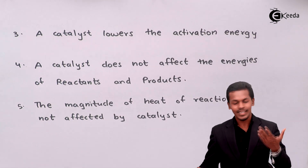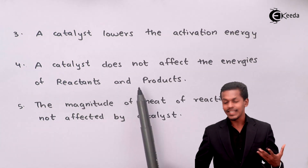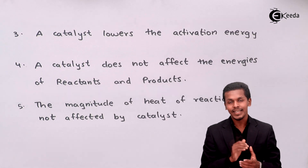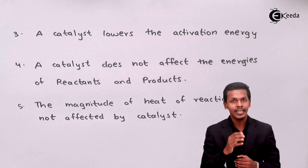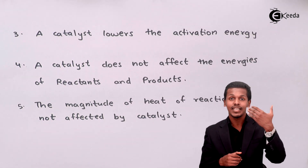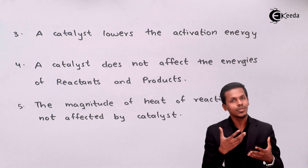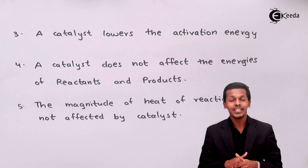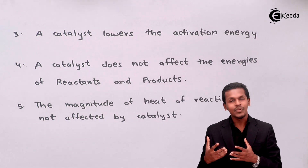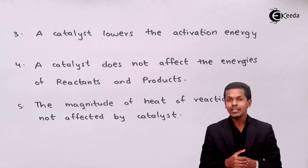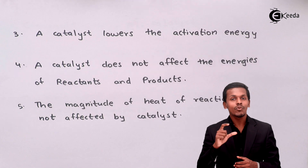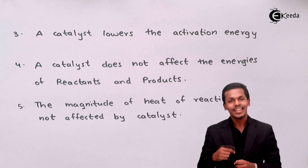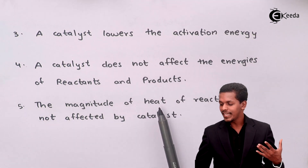A catalyst does not affect the energy of the reactants and products. The reactant and product each have a particular energy that is not affected by the catalyst. However, when a catalyst is added it forms a transition state — also known as a complex — which has higher energy. That higher energy is reduced because the catalyst lowers the activation energy, and thus the products can be obtained sooner. The magnitude of the heat of reaction is also not affected by the catalyst.